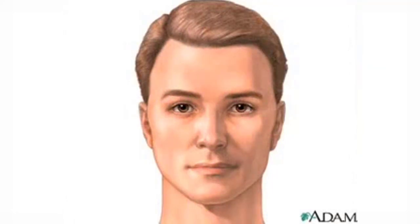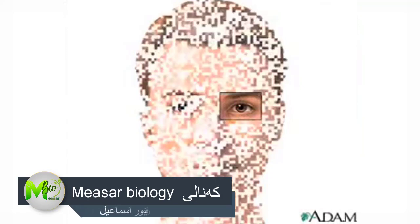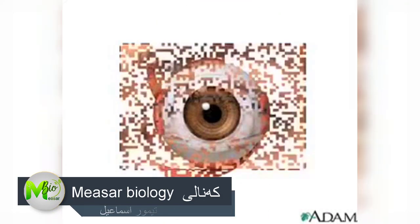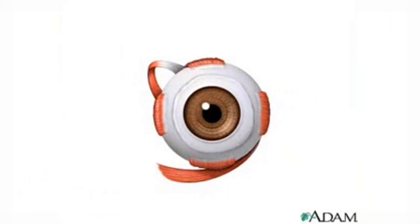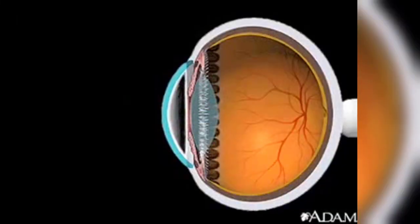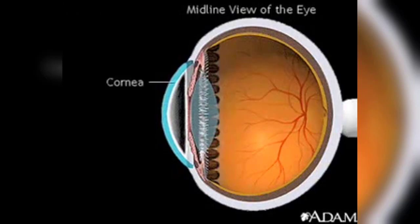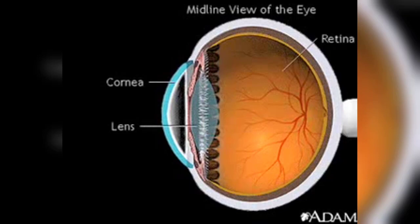Vision is usually the dominant sense used by people with sight. The eye is the organ of sight and is shaped as a slightly irregular hollow sphere. To get a better view, let's enlarge the eye and turn off the lights. Here's a midline view. Various structures in the eye enable it to translate light into recognizable images — among these are the cornea, the lens, and the retina.